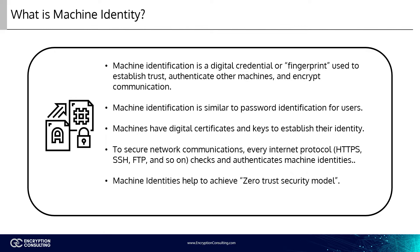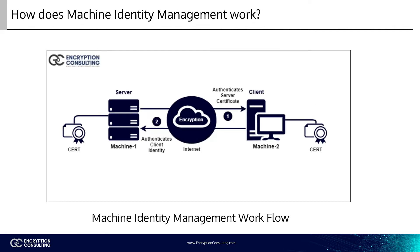Machine identities also help to achieve the zero trust security model, which basically means that no matter whether you're inside or outside an organization's network, you have to be authenticated, authorized, and continuously validated for security purposes and configuration. You can see in the graphic here a high-level view of the working process of machine identity management. When a client tries to establish a connection with a web server, the server provides its digital certificate upon receiving the connection request. The client verifies the digital certificate and verifies the server's identity. When dealing with sensitive applications, the server may also request that the client authenticate its identity by sharing its certificate. After authentication, both exchange keys for encryption and hashing and get a secured connection established.